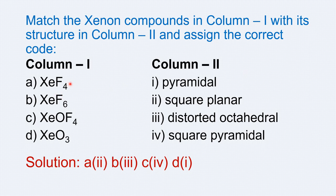In summary: xenon tetrafluoride (XeF4) is square planar, xenon hexafluoride (XeF6) is a distorted octahedron, XeOF4 is square pyramidal, and xenon trioxide (XeO3) is pyramidal. This method allows us to very easily answer the question in a very short span of time. Thank you.